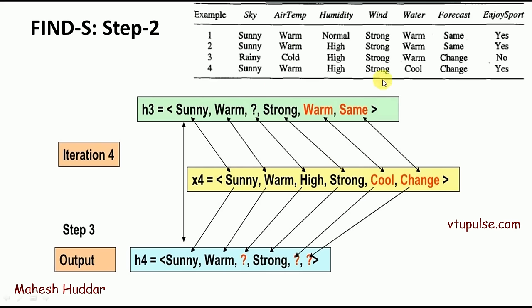We have no more examples to consider, so hypothesis 4 is the final hypothesis. For this given set of examples, this is the maximally specific hypothesis. In this video, I discussed how to apply the FINDES algorithm to a dataset to find the maximally specific hypothesis. I hope this concept is clear. If you like the video, do like and share with your friends. Press the subscribe button for more videos and the bell icon for regular updates. Thank you for watching.